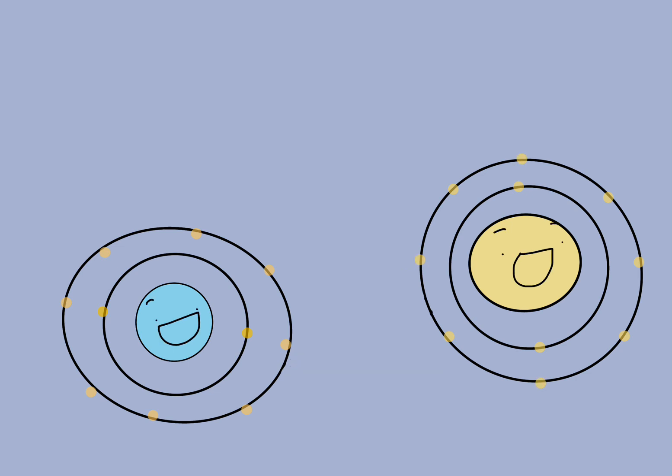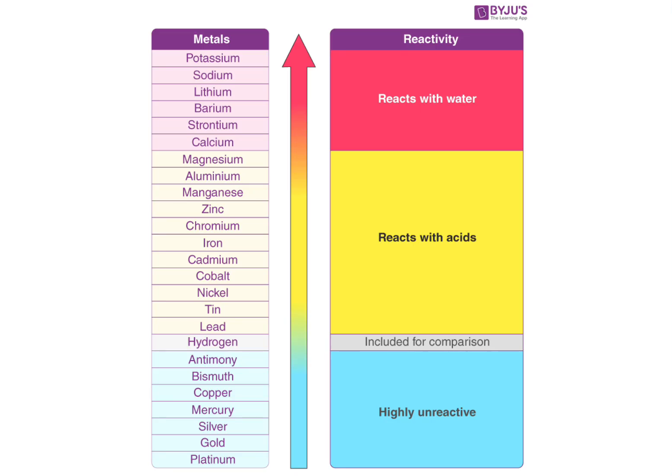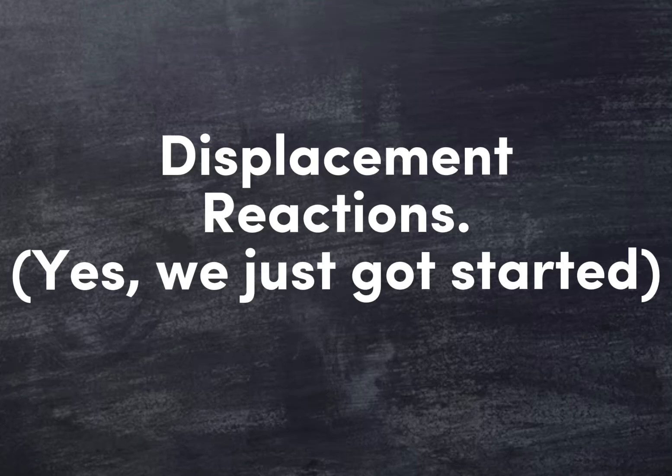The reactivity series is a chart about how easily it is for metals to form positive ions. The easier they do, the more reactive they are. Now on to displacement reactions during the reaction.